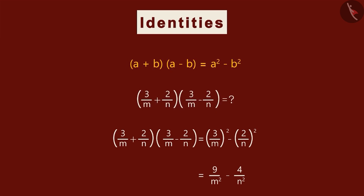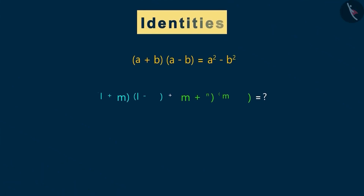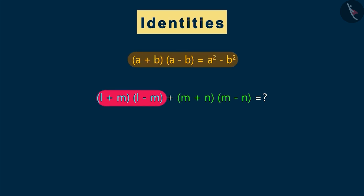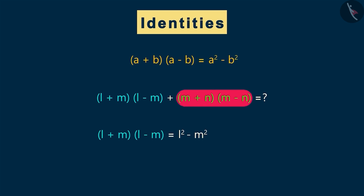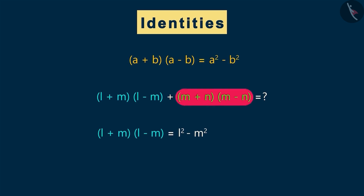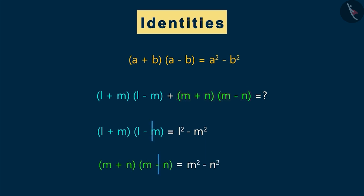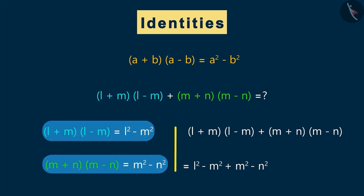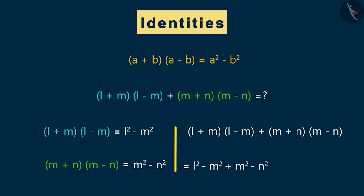Let us now look at the last example related to this identity. Can you find the answer for this expression? We can solve this expression in two parts. This is the first part and this is the second part. Consider the first part — since it is in the form of this identity, we can write it like this. Now consider the second part; we can solve it in the same way, so we get this. Now let's substitute these expressions into the full expression. We can see that minus m square and plus m square will cancel each other. So, we will get this as the final answer.